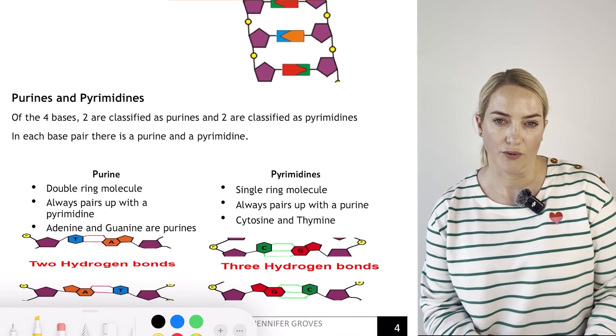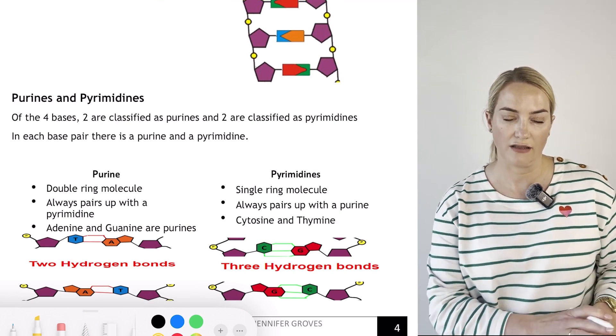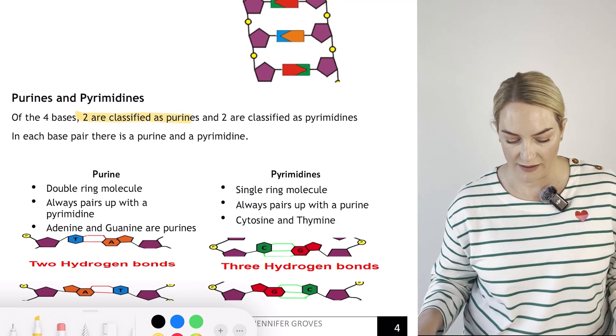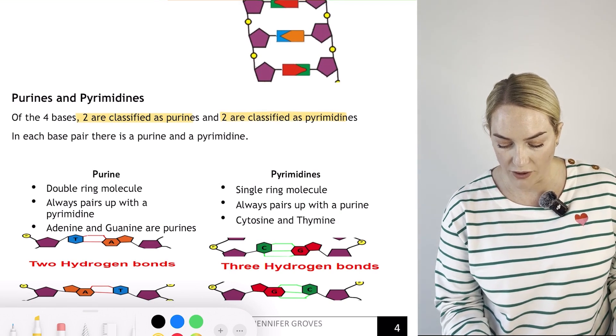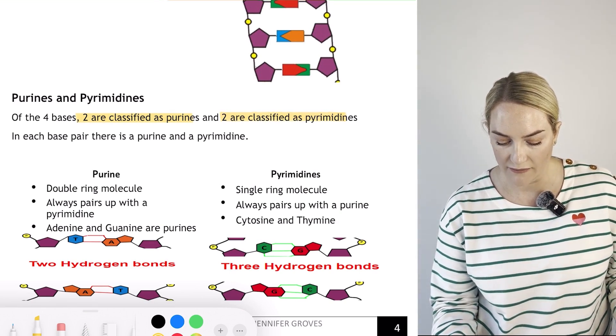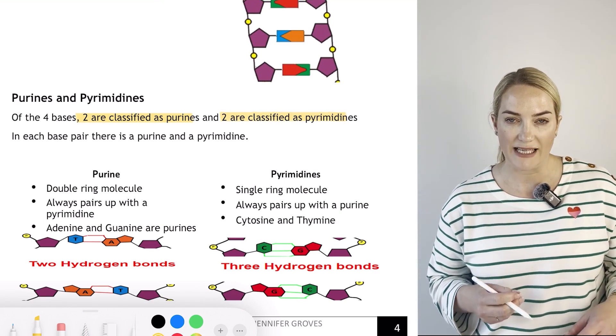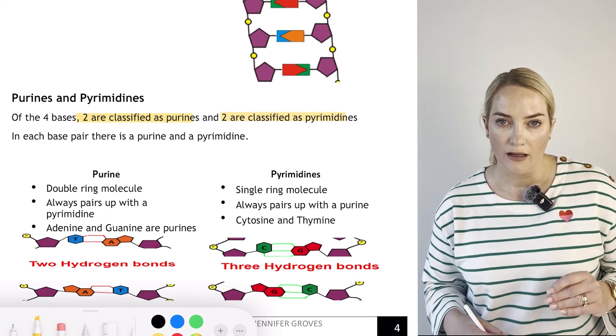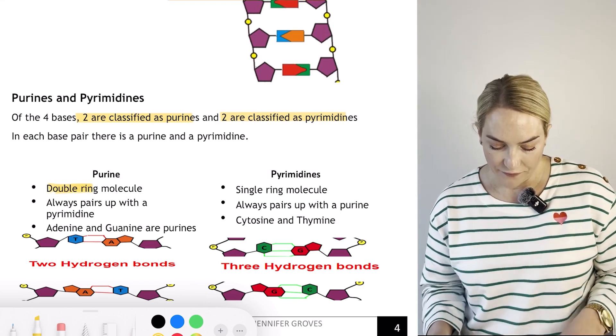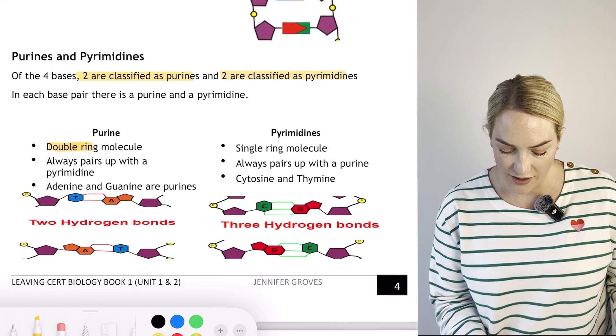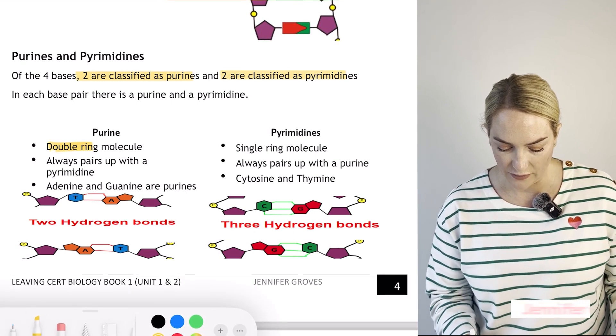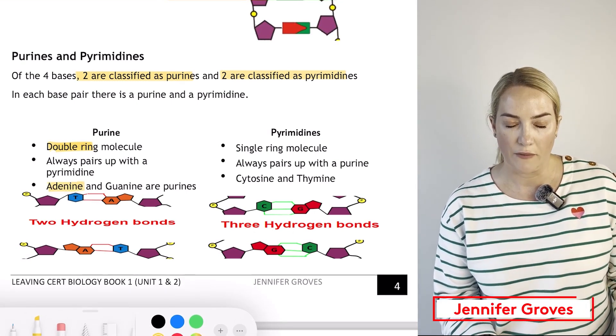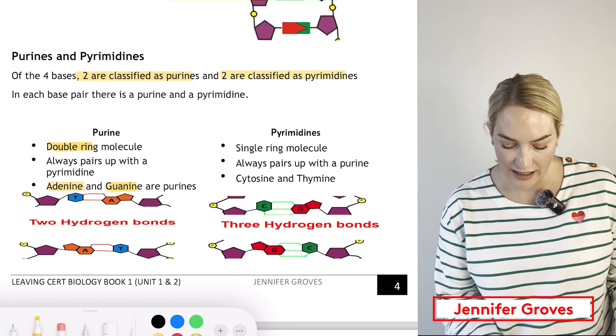This brings us to purines and pyrimidines. We need to know the difference. Of the four bases, two are purines and two are pyrimidines. Within each base pair, you have a purine with a pyrimidine. Your purines are double-ring molecules and they'll always pair with a pyrimidine. Your purines are adenine and guanine.